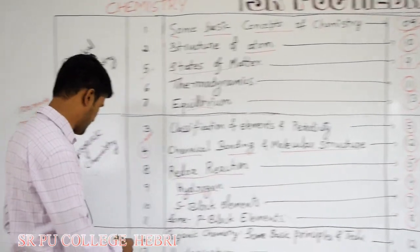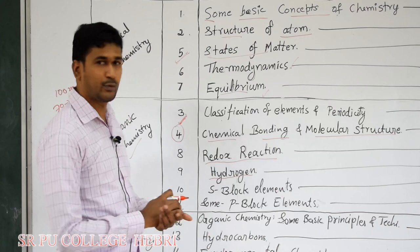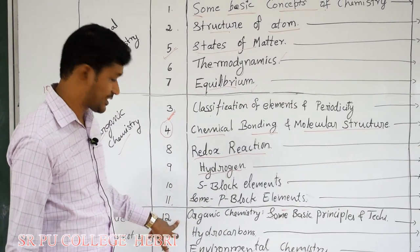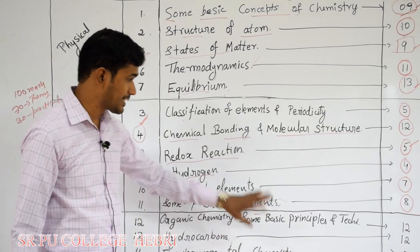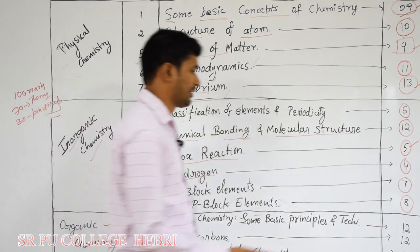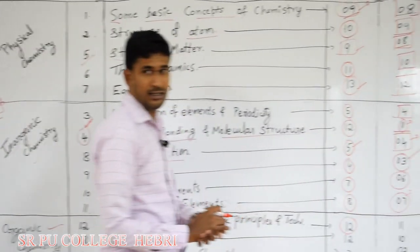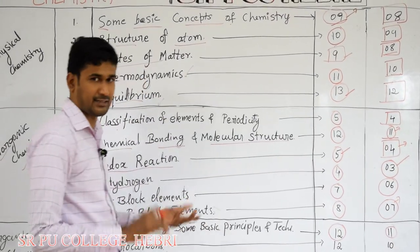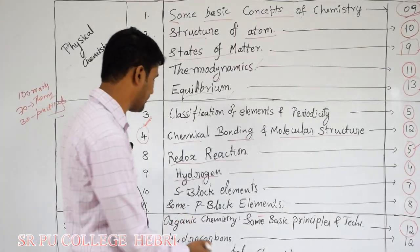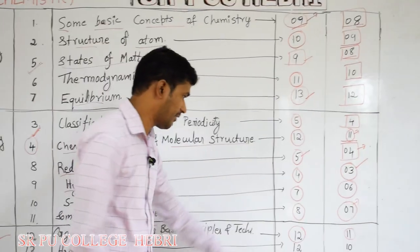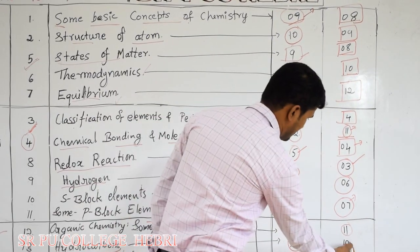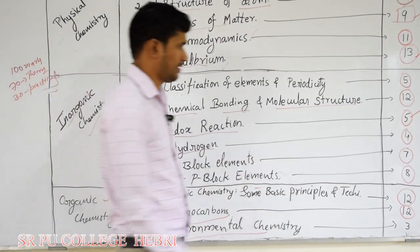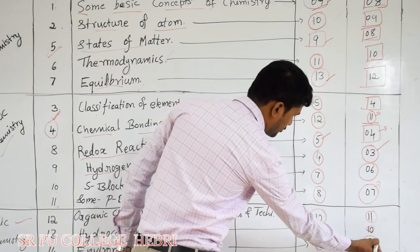The last part in chemistry is organic chemistry, which is a very important part in first PU chemistry. It includes 2 organic chemistry chapters. The first, chapter number 12, is 'Organic Chemistry: Some Basic Principles and Techniques' — 12 hours allotted and total weightage of marks is 11. The second organic chemistry chapter is 'Hydrocarbons' — 12 hours allotted and weightage of marks is 10. There is also a general topic, 'Environmental Chemistry,' a small chapter of 3 hours with 2 mark questions.